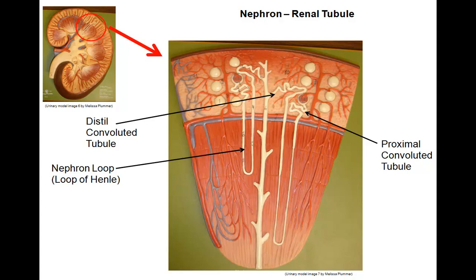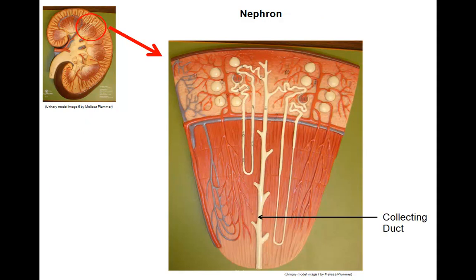The renal tubule is made up of the proximal convoluted tubule, which leads down into the nephron loop, sometimes referred to as the loop of Henle, and then along the length known as the distal convoluted tubule. Proximal and distal refer to the proximity to the renal corpuscle along the length of the tubule. It is along the renal tubule where the second and third steps of urine processing, reabsorption and secretion, take place. When the filtrate has made its way along the renal tubule, anything that remains in the tubule is urine, which drains into the collecting duct, which then drains down to the renal papilla to collect in a minor calyx.